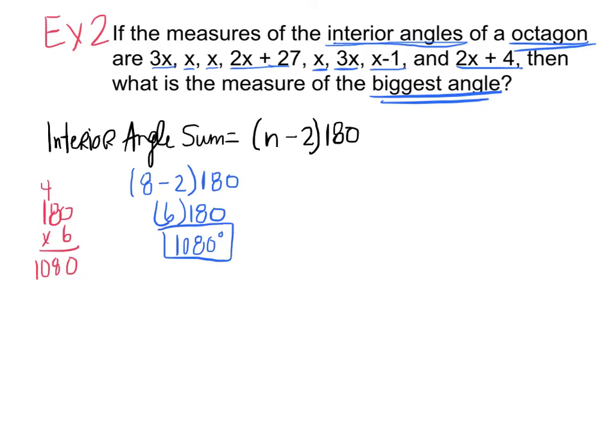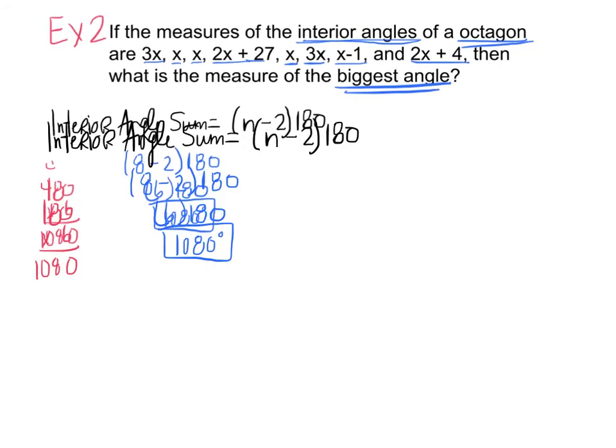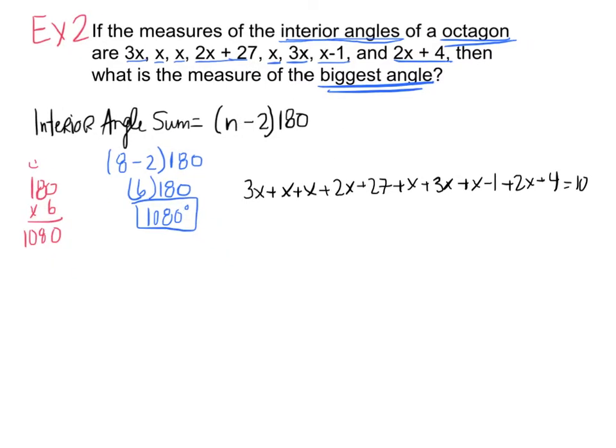So what does that mean if all of the angles on the inside add up to 1080? Well, it means that I can set up the equation 3x, x, x, 2x plus 27, x, 3x, x minus 1, and 2x plus 4, all equal 1080. So those are my 8 angles. They add up to 1080.